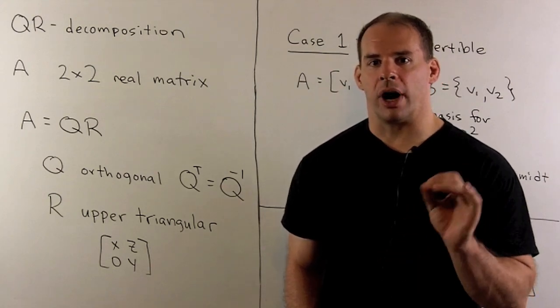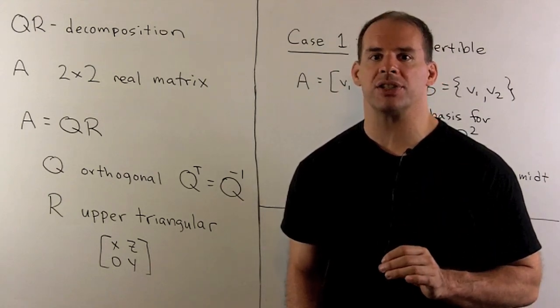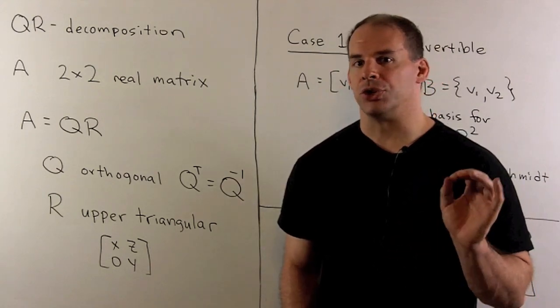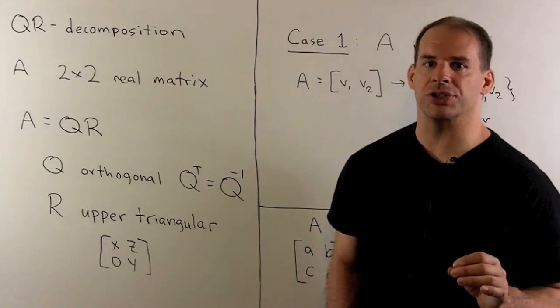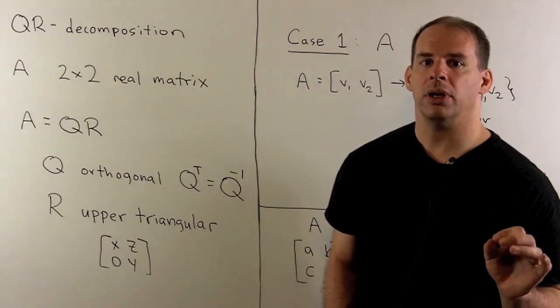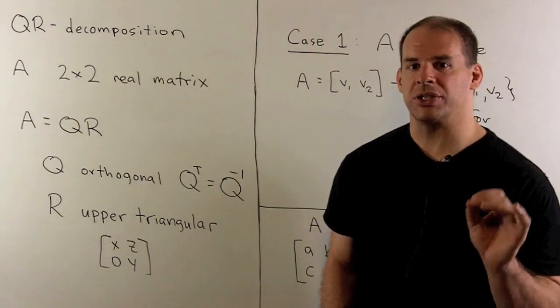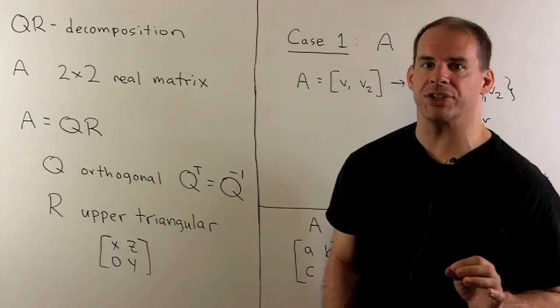One application of the Gram-Schmidt orthogonalization process is the QR decomposition of a matrix. Here, we'll give an explicit formula in the 2x2 case.